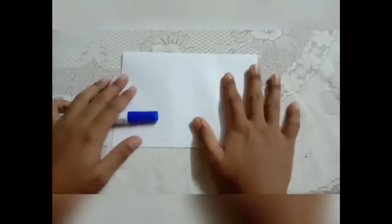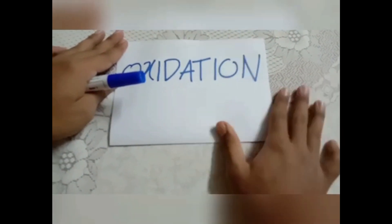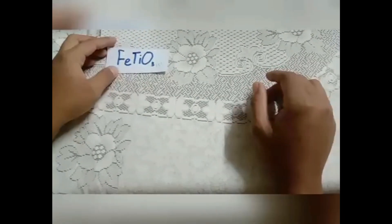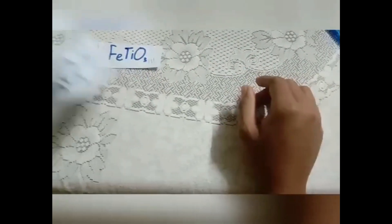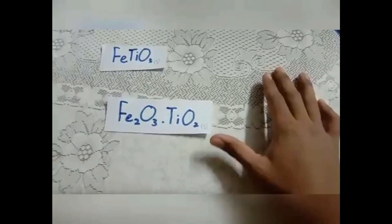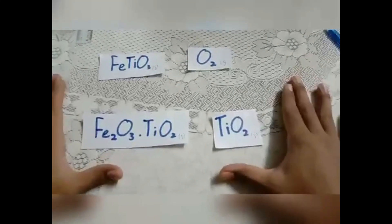Hi, my name is Ramakya and I'll be explaining the equations involved in the Becher process. The first process is oxidation. In the oxidation process, ilmenite is converted to iron oxide (Fe2O3). With the addition of oxygen and heat, the product is titanium dioxide (TiO2).